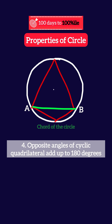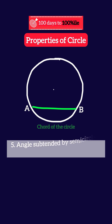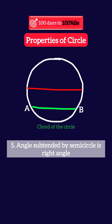...is formed inside a circle. The opposite angles of a cyclic quadrilateral will always add up to 180 degrees. Number five: the longest chord is the diameter, and the angle subtended by the diameter anywhere on the circle is equal to 90 degrees.